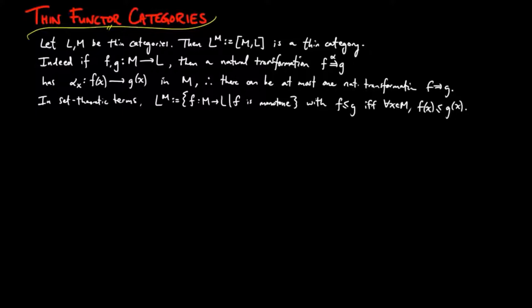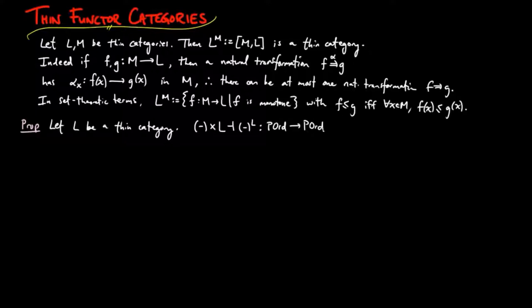Recall that the category of small thin categories is equivalent to the category of pre-ordered sets. So we have the following proposition: let L be a thin category. Then the product functor of L is left adjoint to the exponential functor of L, and this also holds when we restrict to the category of posets, Ord.